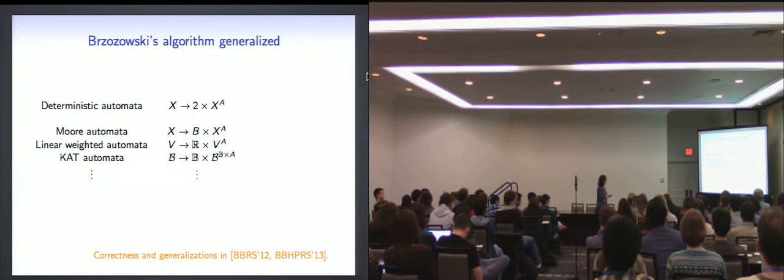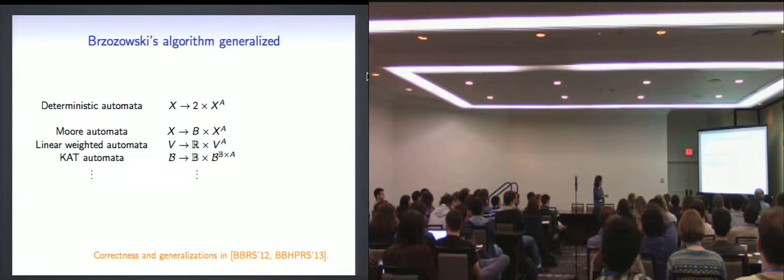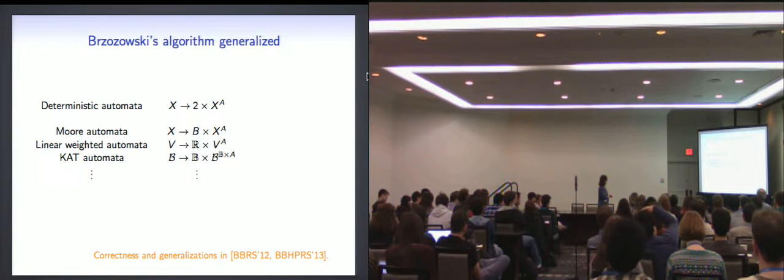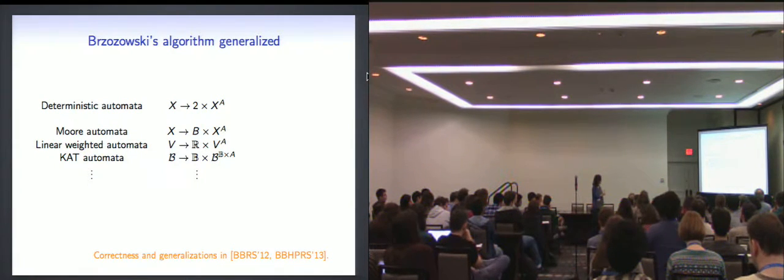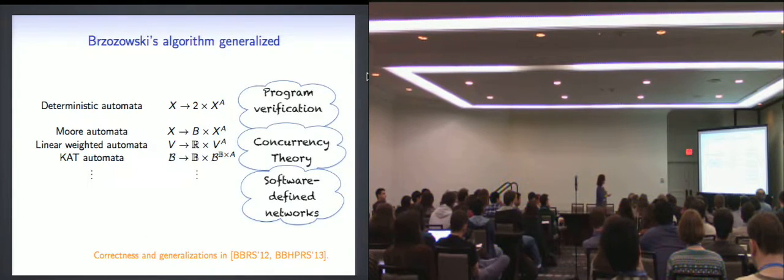In particular, one thing you can do, the fact that there's a two there. So that final and non-final state that's completely irrelevant. And you can replace it by any output set. So you would get an algorithm for Moore automata. The fact that you have a set of states is actually happens to also be irrelevant. So you can replace a set by a vector of states. And then you would get what is called in the literature linear weighted automata. You can even replace it by a Boolean algebra. And then you would get what I call here, Kleene algebra with test automata. Dexter calls them guarded automata. And, you know, you can get all kinds of things just from that observation.